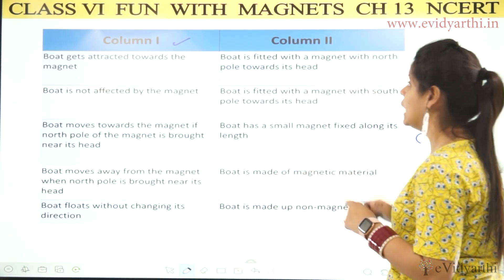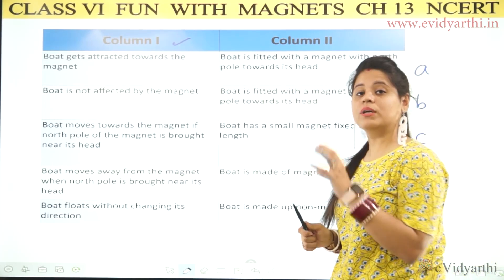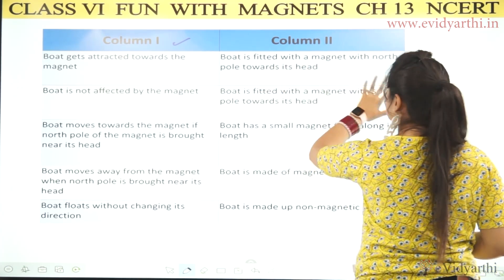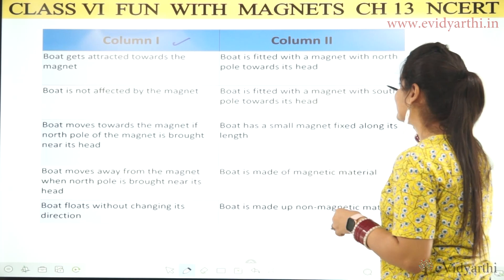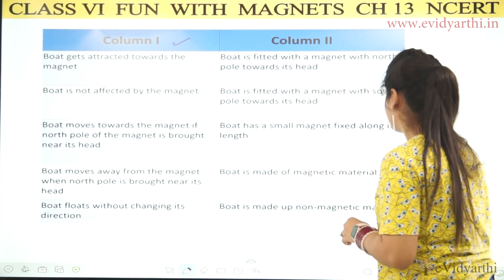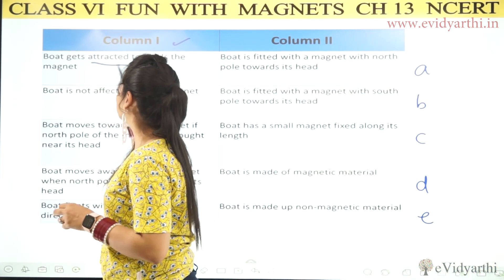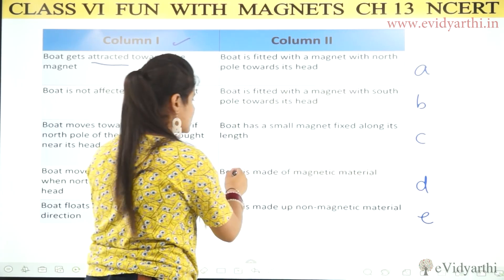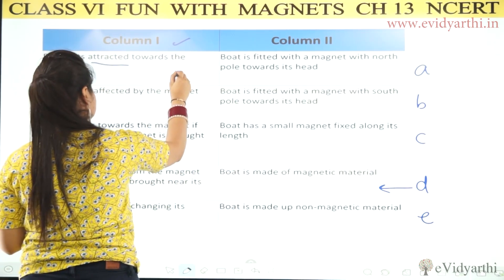The first effect is that the boat gets attracted towards the magnet. The possible reasons listed are: boat fitted with north pole at head, boat fitted with south pole at head, boat has a small magnet along its length, boat is made of magnetic material, or boat is made of non-magnetic material. If the boat is attracted to the magnet, it means it is made of magnetic material — so the answer is D.